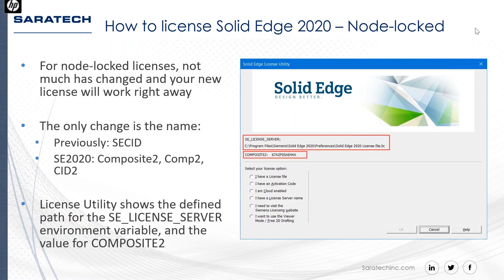Now let's look at node lock licenses in the license utility. Not much has changed there — just the name. In the new Solid Edge 2020 license utility, it looks basically the same. You'll notice the new SE License Server environment variable, which points to your local machine for a node lock license, or to the license server for a floating license. The second field shows the Composite 2 — previously known as the SECID, now called Composite 2, Comp 2, or CID 2.